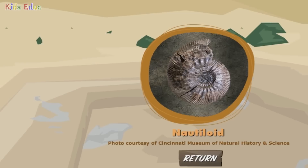Nautiloid. Here's an interesting find. This is called a nautiloid. Nautiloids are kind of like squid, except they have a large outer shell, which is what you see preserved here. Paleontologists have discovered more than 2,500 different types of nautiloids, but only a few are still living on Earth today. My first guess is that this fossil is more than 250 million years old.